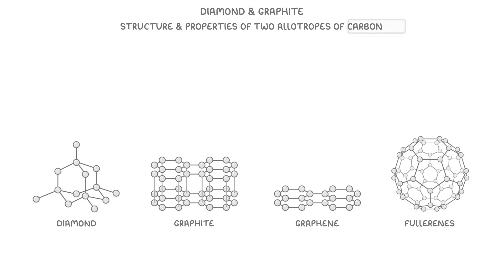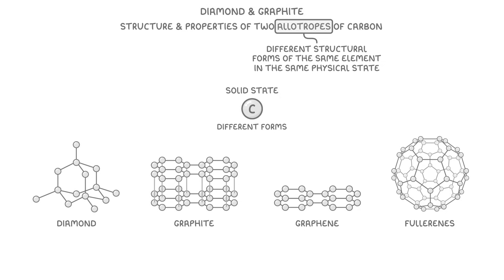First though, you might be wondering what an allotrope is. Basically, allotropes are different structural forms of the same element in the same physical state. So if we consider carbon in the solid state, it can take lots of different forms, like diamond, graphite or fullerenes. These are all different allotropes of carbon.